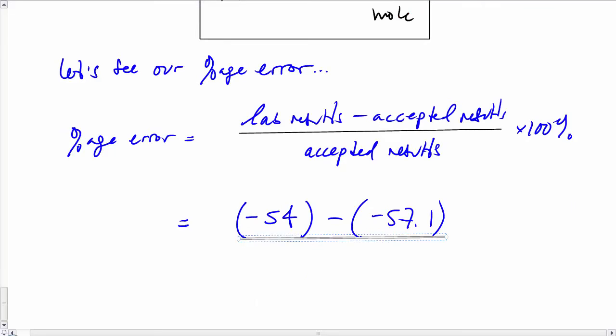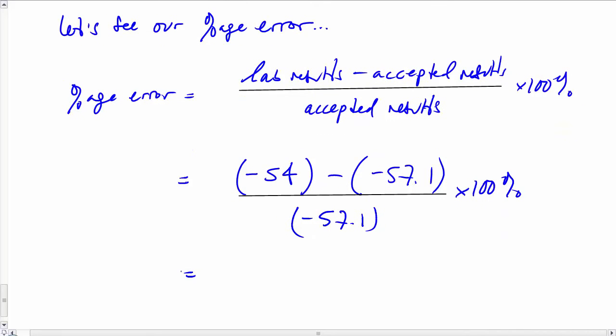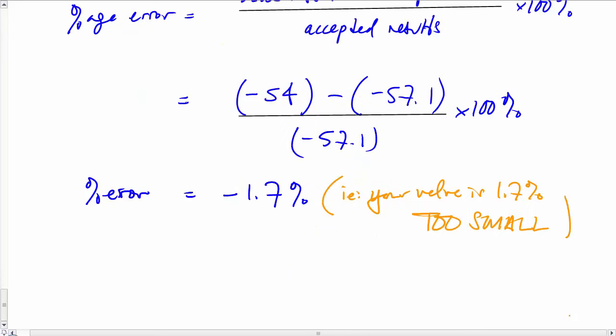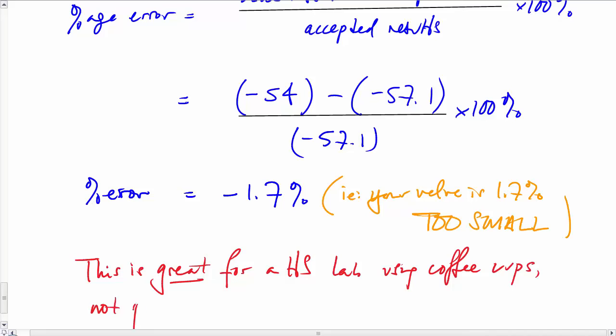The numbers that we calculate—in this case, you can see we'll just put in our values. Accepted value: 57.1 kilojoule per mole. Divide by that one, multiply by 100. In our case, we get a percentage error of -1.7%. The meaning of the negative sign is that our value is 1.7% too small. That's reasonable and sensible, given that our calorimeter is not perfect. And it's a great result for a high school lab using coffee cups, not particularly perfectly mixed solutions, and so on.